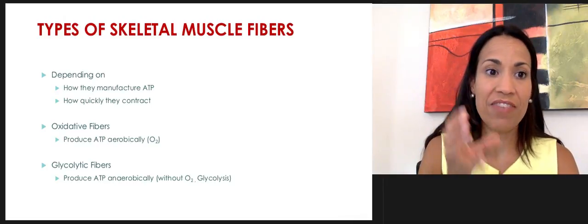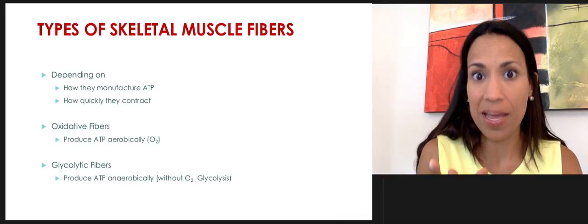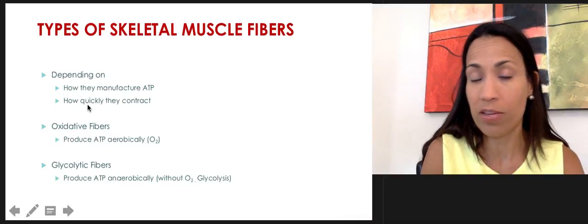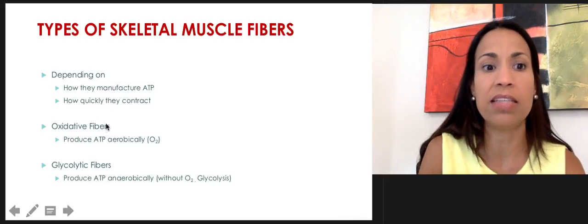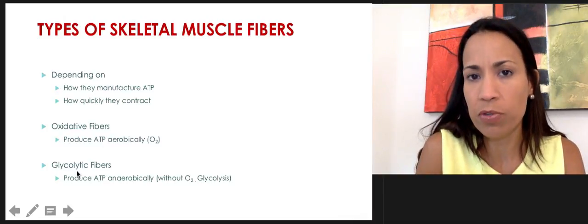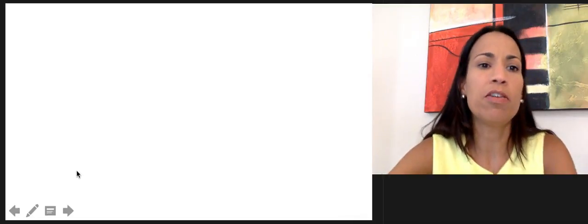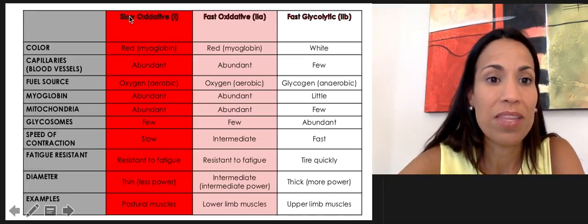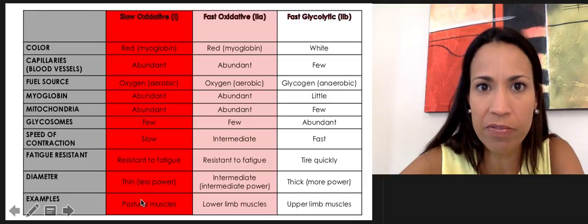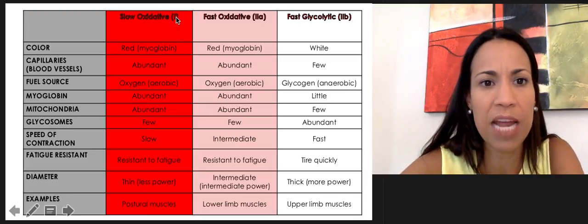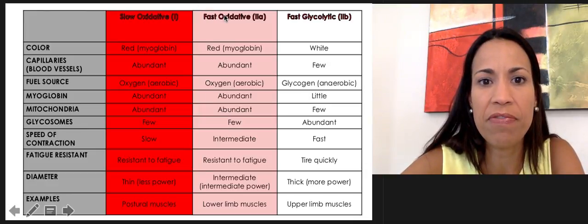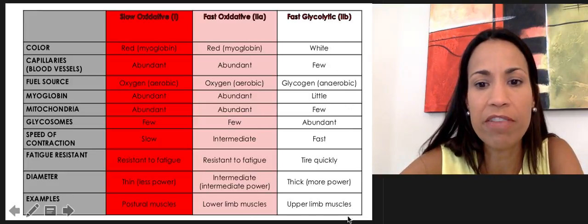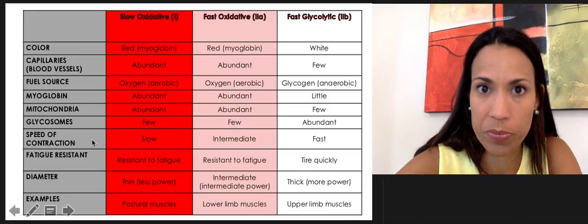According to this, we have three types of skeletal muscle fibers. The oxidative fibers can contract slowly or they contract fast. So we have slow and fast oxidative fibers. And the glycolytic fibers are always fast. In red, I have the slow oxidative fibers. Some people call them type 1. And type 2, we have the fast fibers. The fast oxidative fibers in pink and fast glycolytic fibers in white.